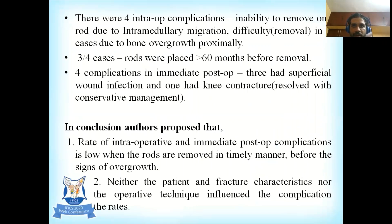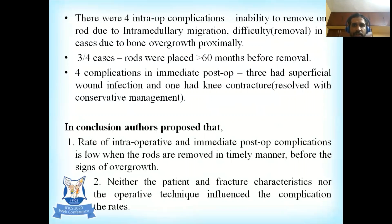There were four intraoperative complications: inability to remove one rod due to intramedullary migration, and difficulty in removal in three cases due to bony overgrowth; approximately three of those four rods had been placed more than 60 months prior to removal. Four complications occurred in the immediate postoperative period: three superficial wound infections and one knee contracture, both resolving with conservative management. The authors concluded that the rate of intraoperative and immediate postoperative complications is low when rods are removed in a timely manner before signs of overgrowth.